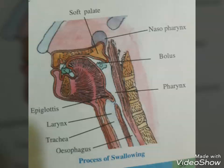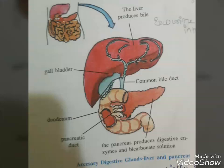The hard chewing surface of the teeth, made up of enamel, helps in mastication of food. The tongue is a freely movable muscular organ attached to the floor of the oral cavity by the frenulum. The upper surface of the tongue has small projections called papillae, some of which bear taste buds. The oral cavity leads into a short pharynx which serves as a common passage for food and air. The esophagus and the trachea (windpipe) open into the pharynx.